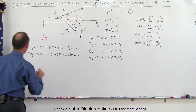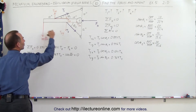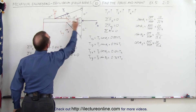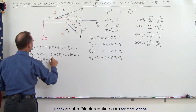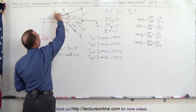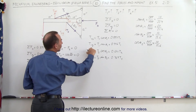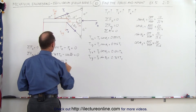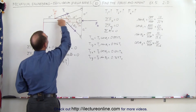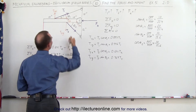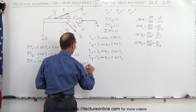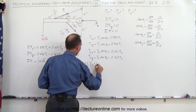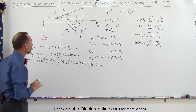The sum of all moments equals zero: the 100-pound force causes a counterclockwise moment with a moment arm of 30 inches, giving positive 100 × 30. T1y causes a negative (clockwise) torque: minus 0.446 T1 × 20 inches. T2y causes a positive (counterclockwise) torque: plus 0.769 T2 × 10 inches. All of this equals zero. Now we have three equations and three unknowns.